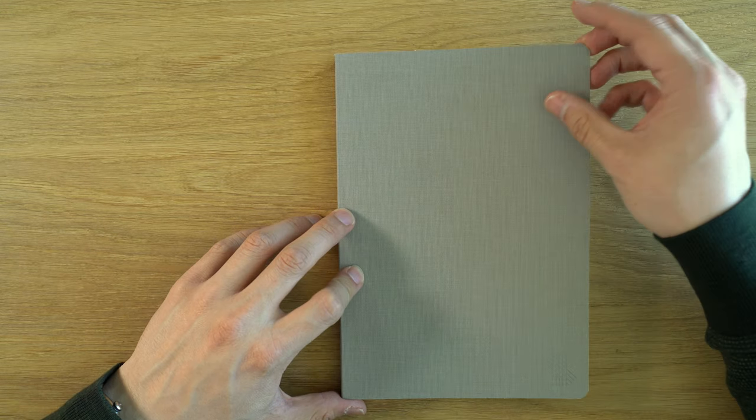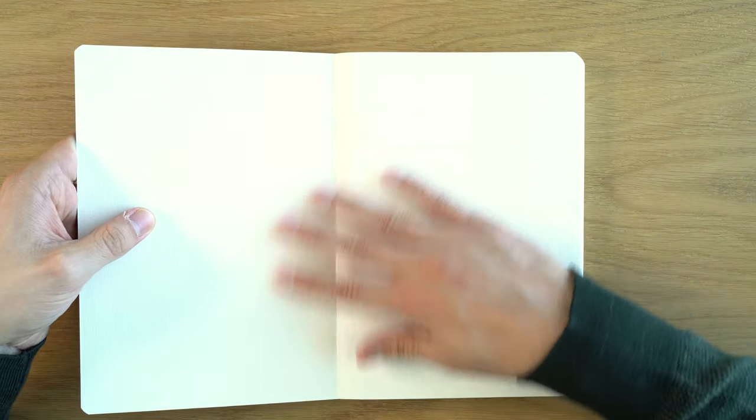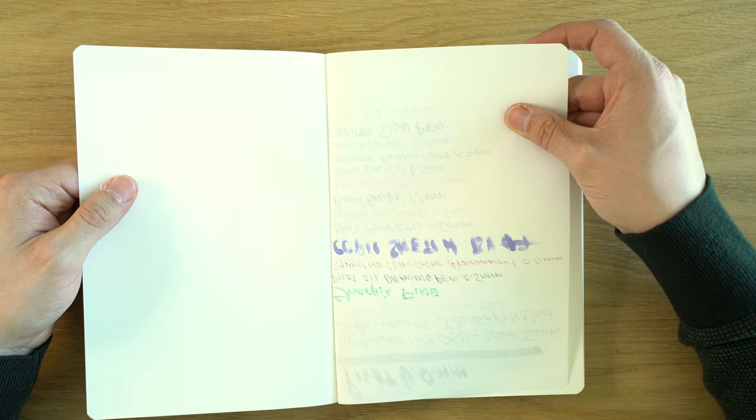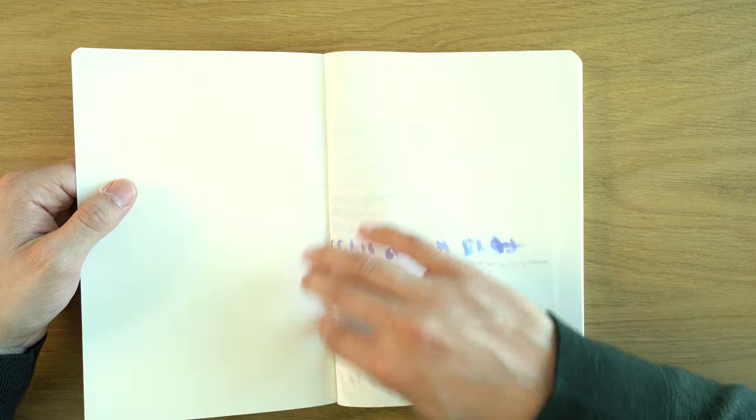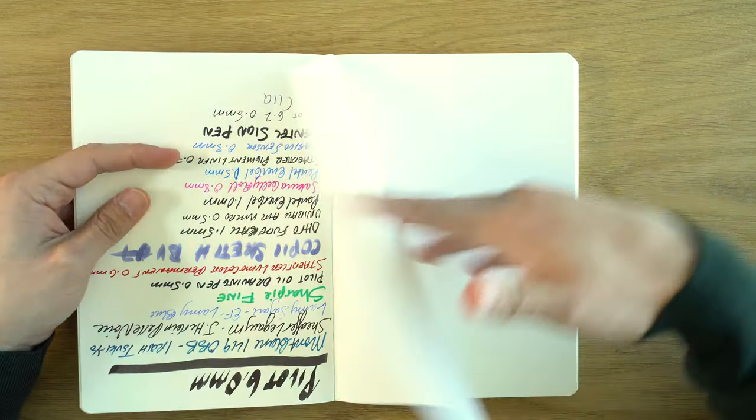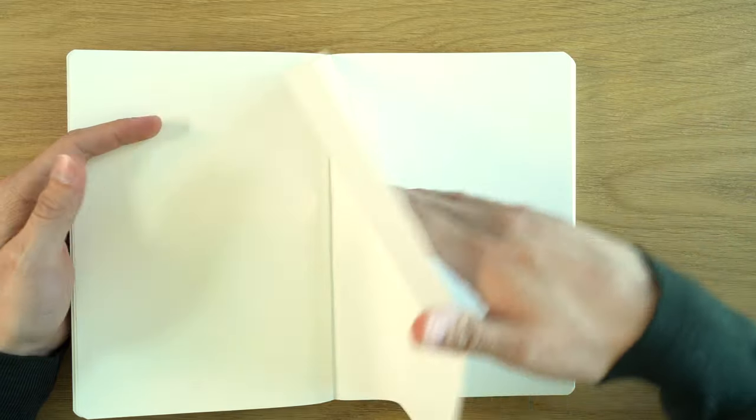So opening it up, we have this textured paper paste down. And the first page is actually kind of glued to this end paper here. And then we go into the paper test, and it's really just blank pages. There's nothing else.